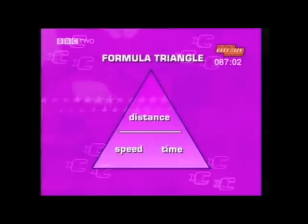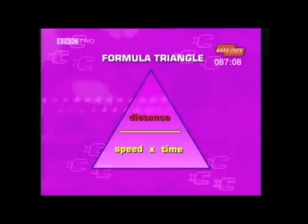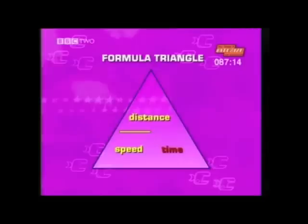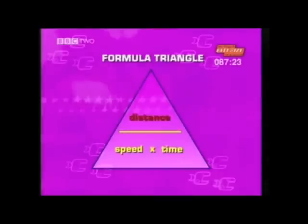Speed equals distance divided by time. Distance equals speed multiplied by time. Time equals distance divided by speed. So if a test question asks you to find the distance an object travels, you will be given the speed and the time, which you can then multiply together to find the distance.